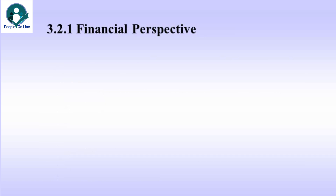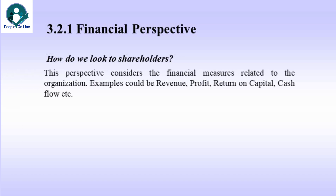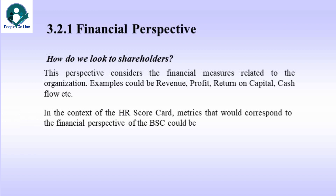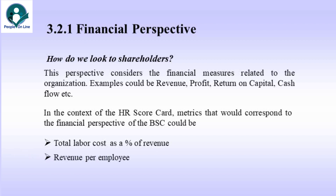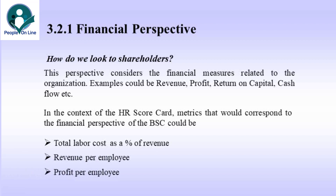The financial perspective can be best summed up by this: it considers the financial measures related to the organization's performance. Examples could be revenue, profit, return on capital, cash flow, etc. In the context of the HR scorecard, metrics that would correspond to the financial perspective of the BSC could be total labor cost as a percentage of revenue, revenue per employee, and profit per employee.